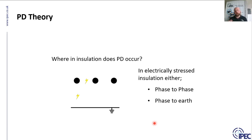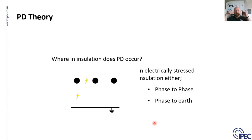PD can occur phase-to-phase or from phase to earth. Depending on where the defect is — where the problem is in the network — depends on where it occurs. But it can basically occur where you can get a point of electrical stress, so naturally that can be between two phases heading in different directions, or it can be between phase and earth.